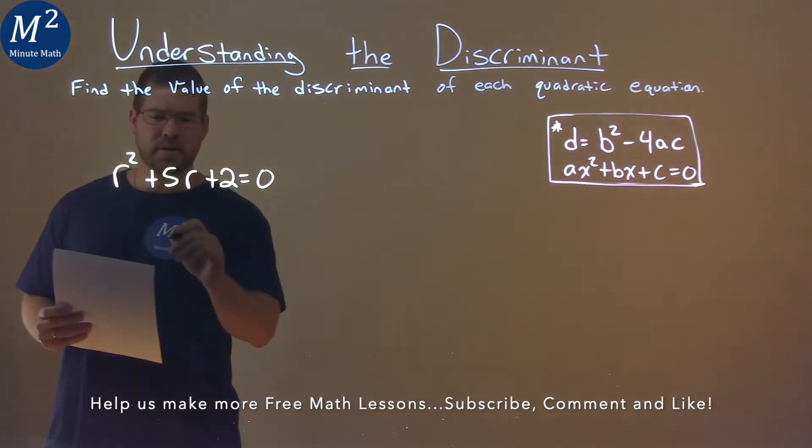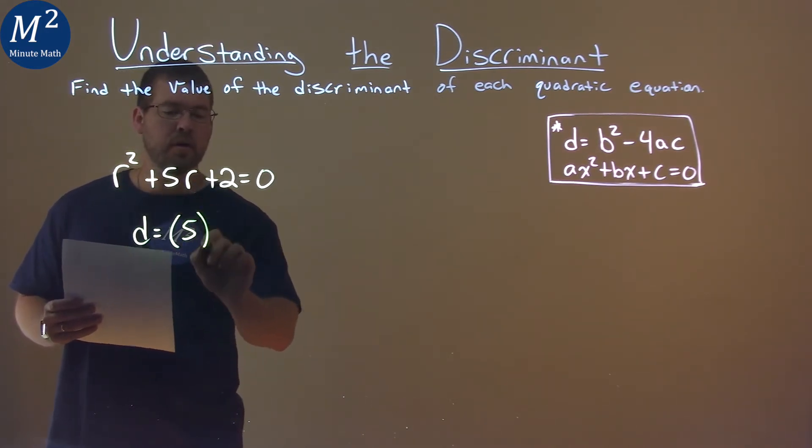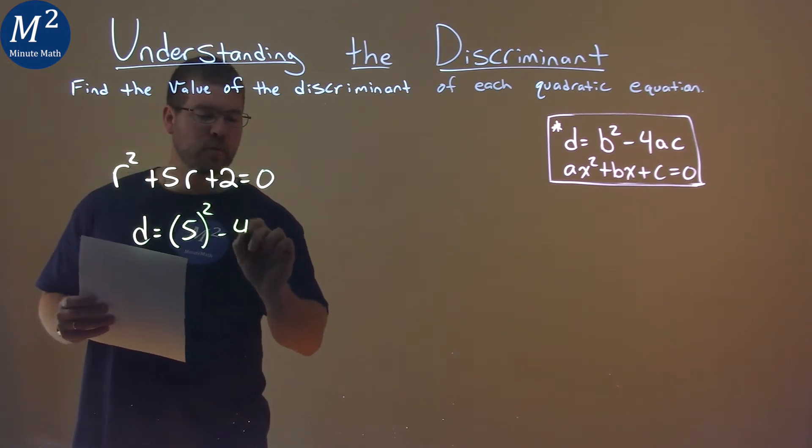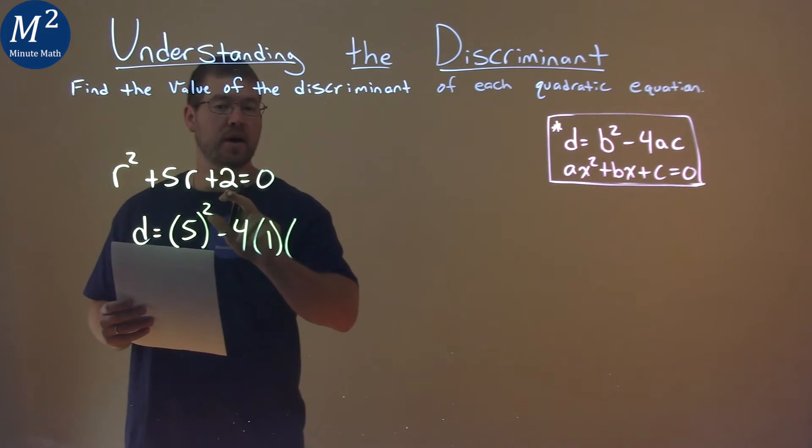We'll use our formula here. Our discriminant is equal to our b value, in this case 5, squared, minus 4 times our a value, which is 1, times our c value, which is 2.